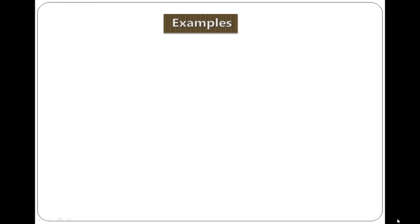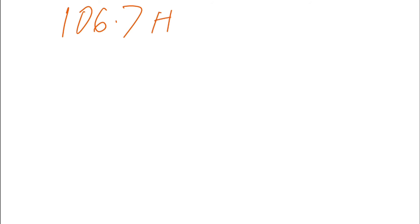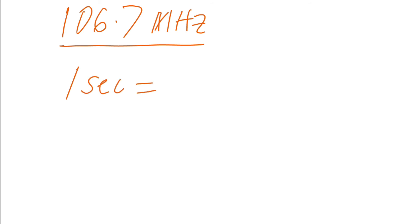Now let's use these two equations to do a few examples. Example number one: a VHF (very high frequency) radio transmitter broadcasts radio waves at a frequency of 30 megahertz. When we say a radio station transmits at, for example, 106.7 MHz, it means that in every second the station is transmitting at a rate of 106.7 million cycles per second — that is the frequency.